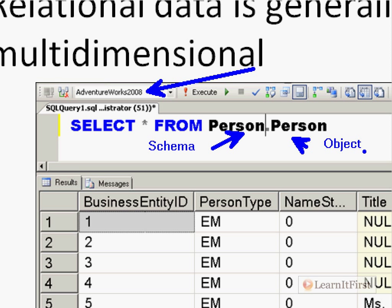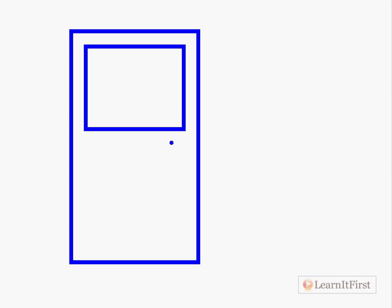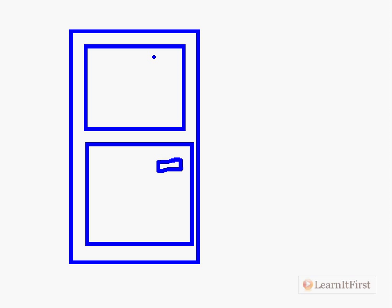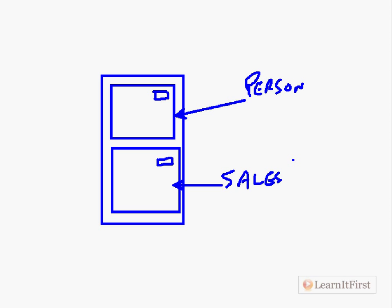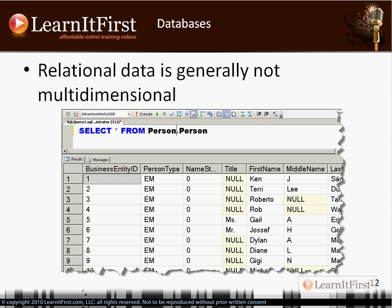One way to think about a schema: imagine a filing cabinet. Your database is like a big filing cabinet. This drawer is the person schema, and this drawer is the sales schema. When we say SELECT * FROM person.person, we're opening up the person file cabinet drawer and pulling out the folder called person. That's the 30-second intro to what a schema is in SQL — we also use it for security reasons, but that's the core idea.